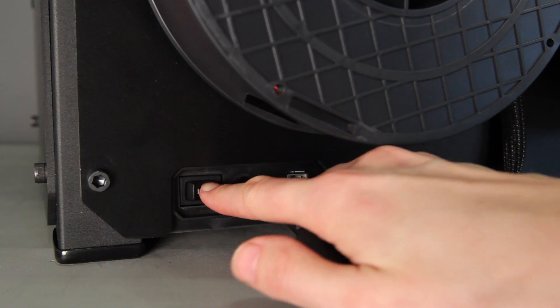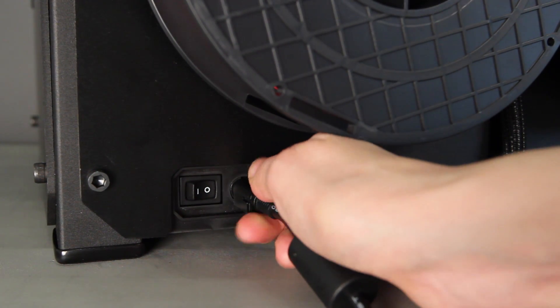Always make sure that your MakerBot Replicator 2X is turned off and unplugged when you're going through the maintenance routine.